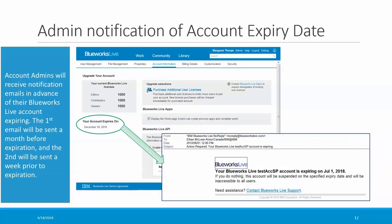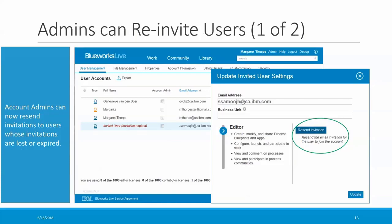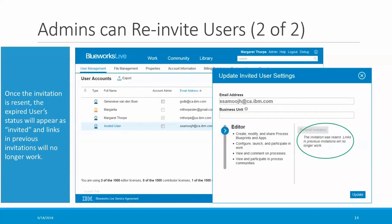Sometimes users invited to BlueWorks Live may lose their invitation emails, or maybe they're on vacation and the invitation expires. Before this release, you had to archive the user and then restore them in order to re-invite them to the account. But with this release, you'll be able to simply resend the invitation — that way you won't lose the user info that you entered, such as license type, business unit, or user groups. To do this, go to the User Management tab of the Admin Console and locate the user. Expired user invitations are displayed in red. Click on the user's name, and there's now a button that will allow you to resend the invitation. Once the invitation is resent, the user's status will change from expired to invited, and links in any previous invitations will no longer work.